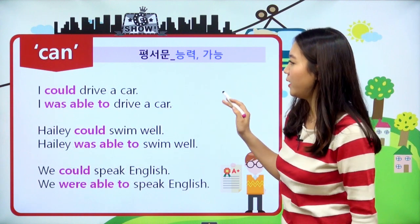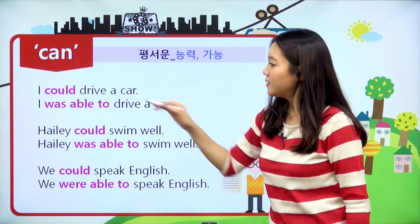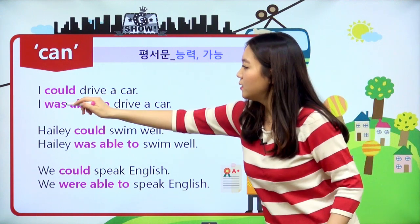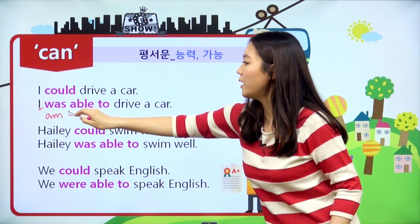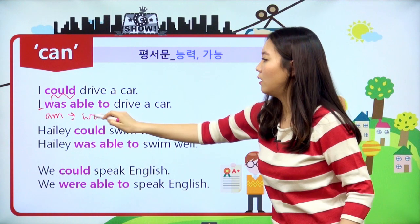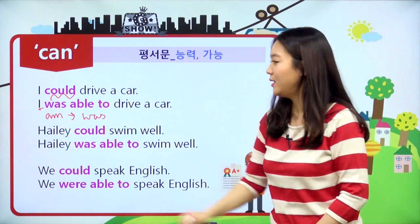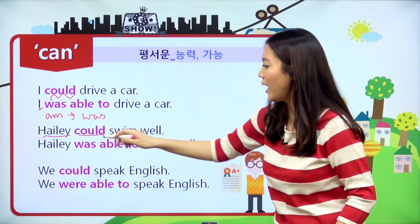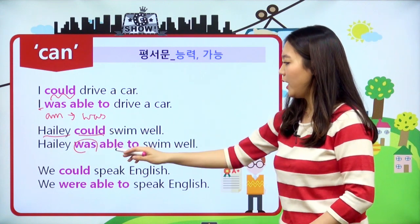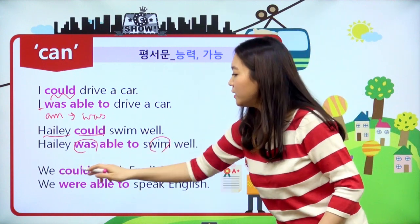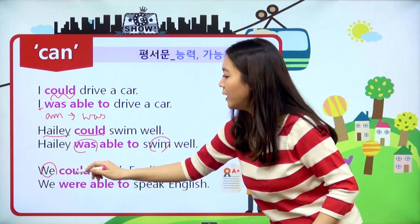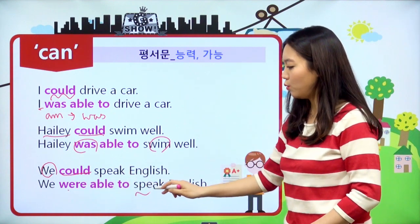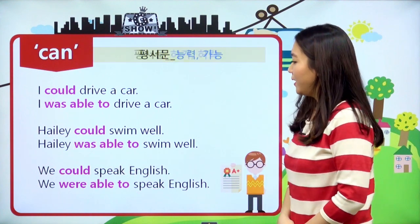과거형을 한번 살펴볼게요. can의 과거형은 could라고 했었죠. I could drive a car 하면 '나는 자동차를 운전할 수 있었어'라는 뜻이고요. I니까 원래 현재형은 am이었는데 이것의 과거형이죠. 그래서 was가 됐어요. I was able to drive a car. Hayley could swim well은 3인칭 단수의 과거니까 was able to swim well. We could speak English는 복수형이고 원래 현재일 때는 are이었겠지만 과거이기 때문에 were able to speak English. 마찬가지로 동사 원형이 왔다는 거 기억해 주시고요.